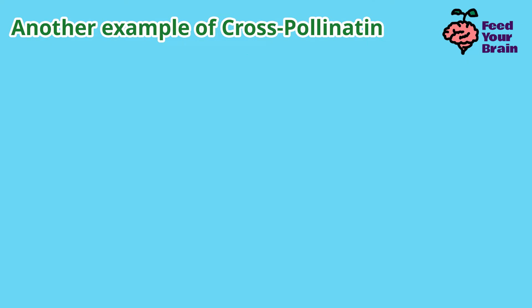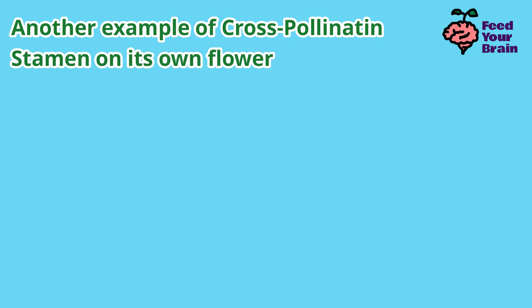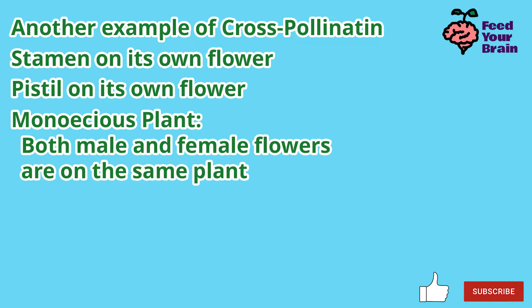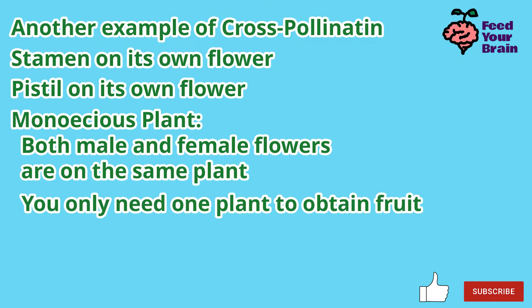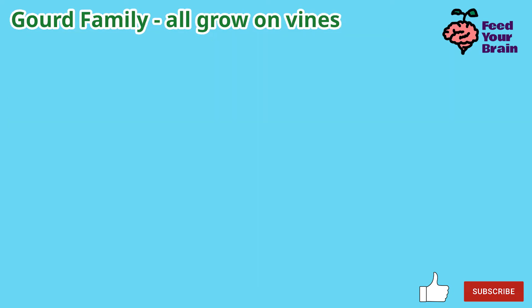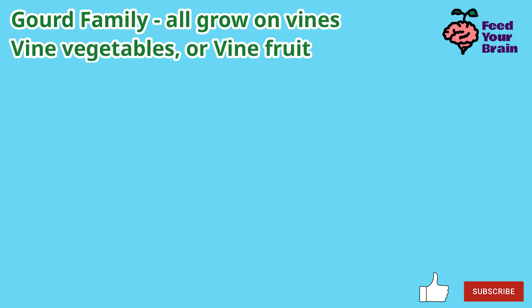Another example of cross-pollination: the stamen is on its own flower and the pistil is on its own flower — a monoecious plant, where both male and female flowers are on the same plant. You only need one plant to obtain fruit. This includes the gourd family, which all grow on vines — these are vine vegetables or vine fruit.